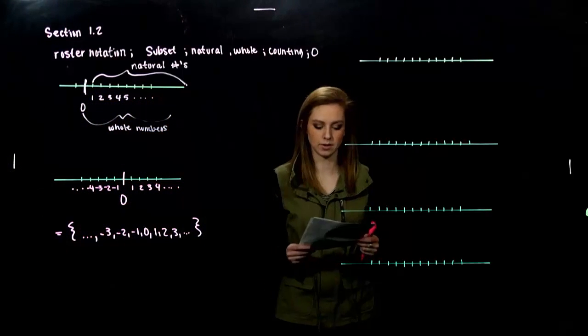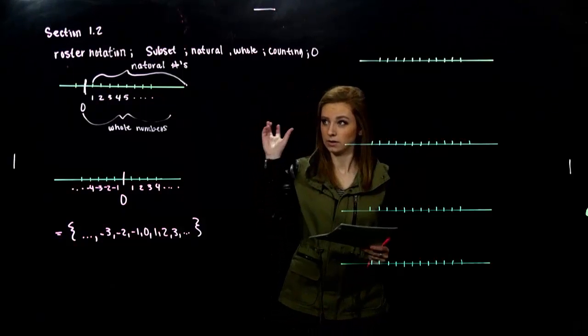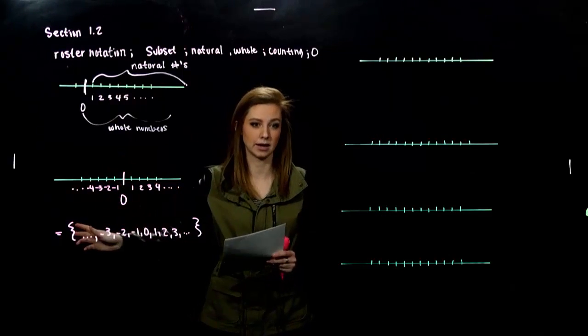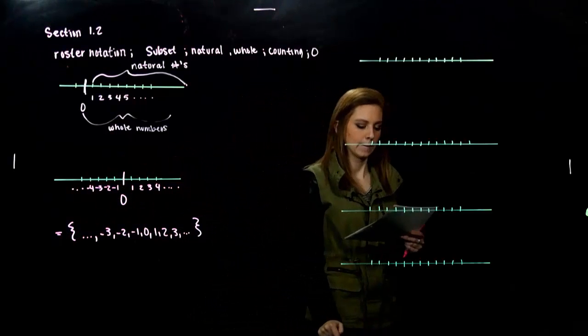All right. So, you need to know the difference between those. Natural numbers, counting. Whole numbers, add in zero. Integers, add in the negatives. We got it.